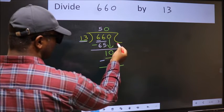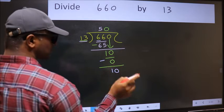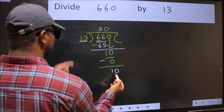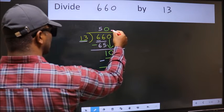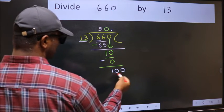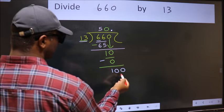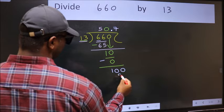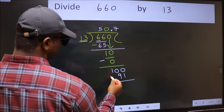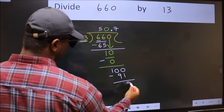Over here, we did not bring any number down, and 10 is smaller than 13. So now we can put dot and take 0. So 100. A number close to 100 in 13 table is 13 times 7, 91. Now we should subtract. We get 9.